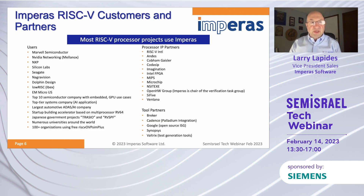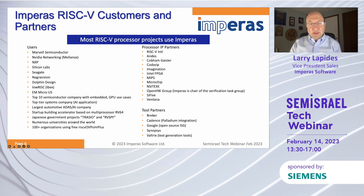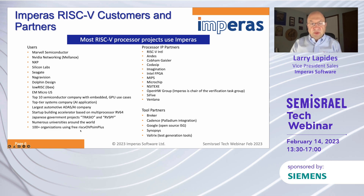Looking at our customers and partners, we've got a nice list. We're working with most of the RISC-V processor IP vendors and tool vendors as well — quite a bit of collaboration and partnership. We've been working with various government projects, especially in Japan. We work with numerous universities around the world. And lastly, we provide a free model and simulator — RISC-V OVP SimPlus — with over 100 organizations using it.